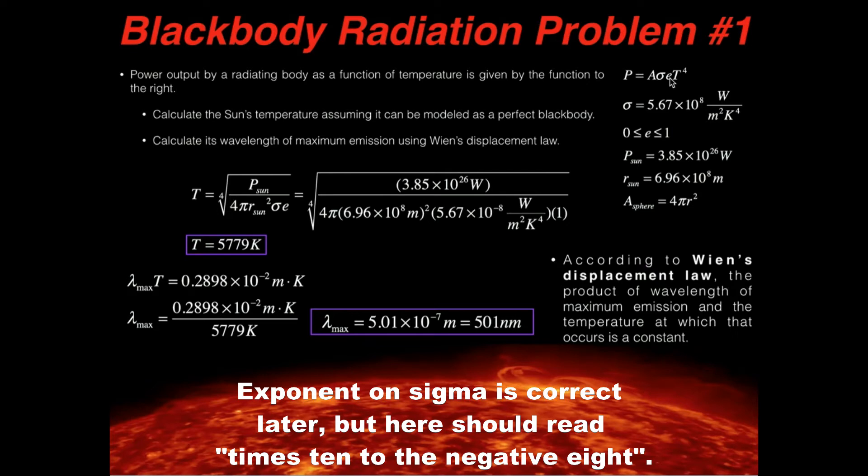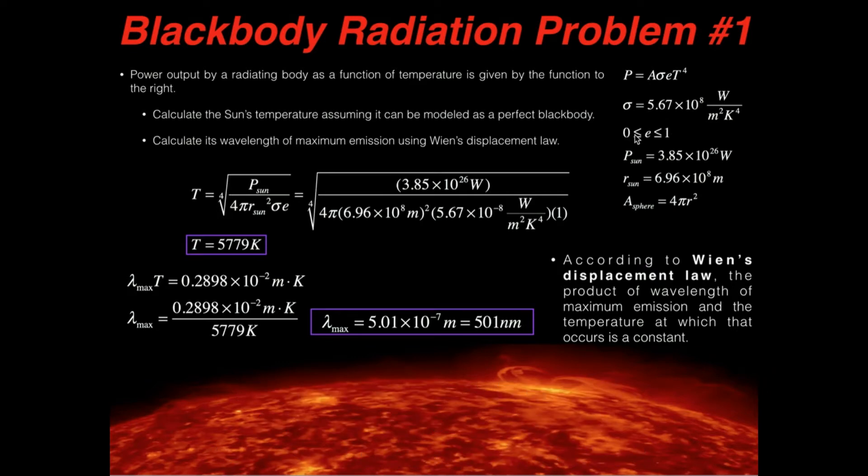E is how good of a perfect black body are we talking about? One is a perfect black body. Zero is not a black body at all, and so it can be any decimal between zero and one, okay? We're going to assume that the Sun can be modeled as a perfect black body, so our E is just going to be one, all right?